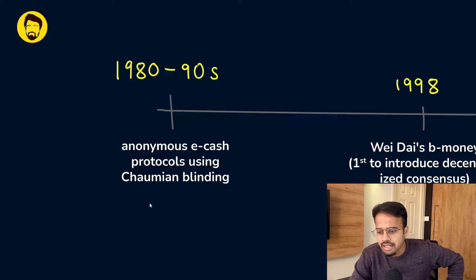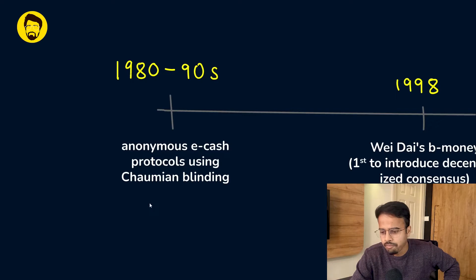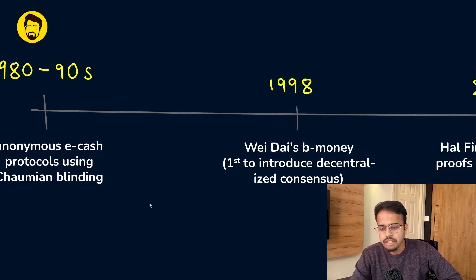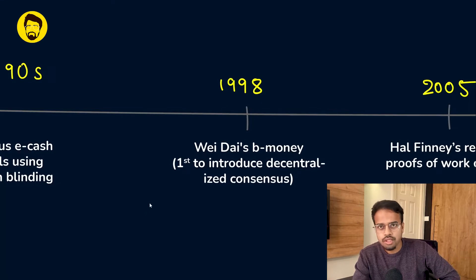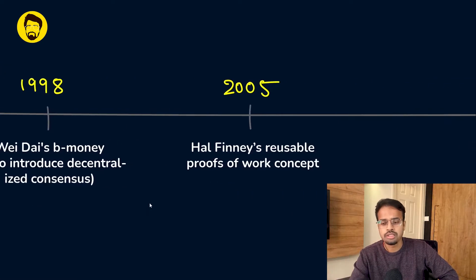The consensus mechanism is not something very new. In fact, in the 1980s or 90s, anonymous e-cash protocols using Chaumian blinding came into existence. Then in 1998, Wei Dai's b-money was the first to introduce a decentralized consensus mechanism. And in 2005, Hal Finney's reusable proof-of-work concept came into existence.